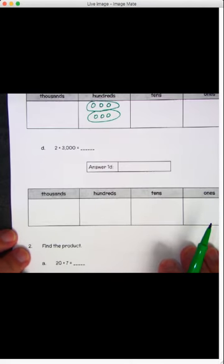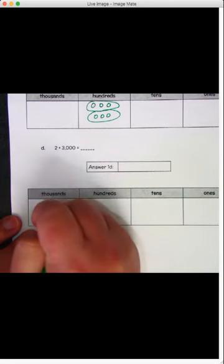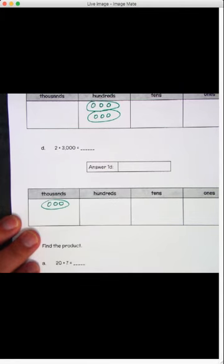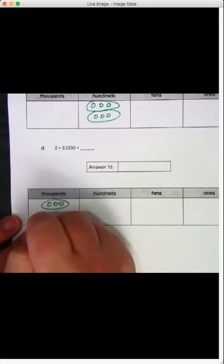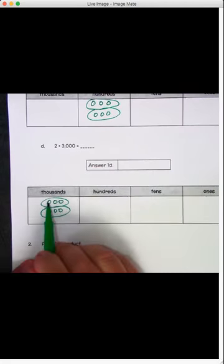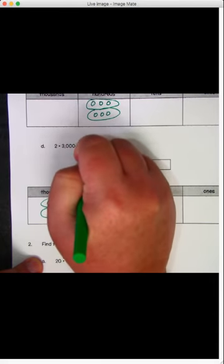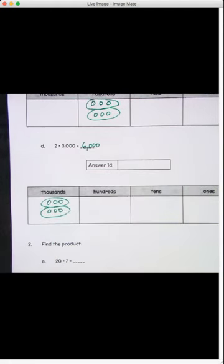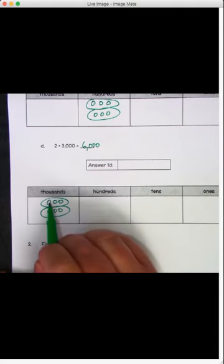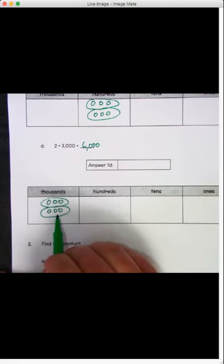And the last one here on this first problem. We're doing 2 times 3,000. We went over here to the thousands place doing our one group of 3,000. Got to show two times that many. 1, 2, 3. Another group of 3,000. So we've got 1,000, 2,000, 3,000, 4,000, 5,000, 6,000. So 2 times 3,000 is 6,000.